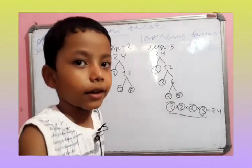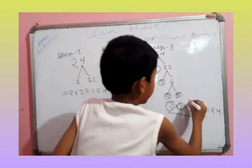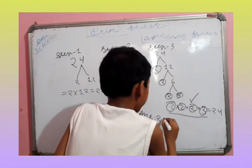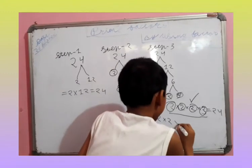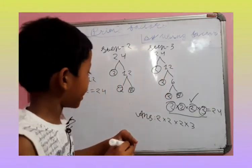Now, let's see the answer. The answer is 2 times 2 times 2 times 3. This is our answer.